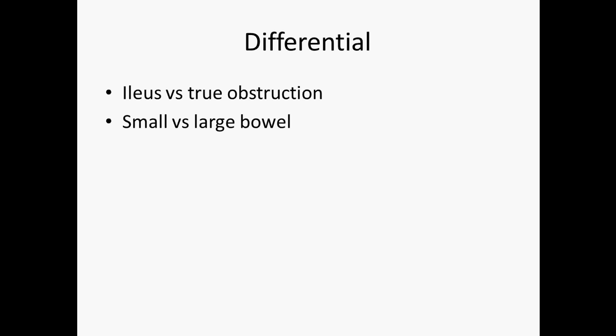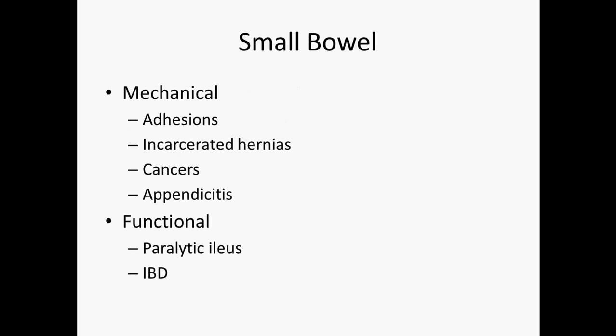It's important to differentiate whether this is happening in the small bowel versus the large bowel, both for differential diagnosis and treatment. In the small bowel, the most common causes of blockage are either mechanical or functional. Mechanical blockages include adhesions, where scar tissue pulls or kinks the bowel, incarcerated hernias where a piece of bowel has twisted or kinked, and cancers and appendicitis which can cause blockage from inflammation.